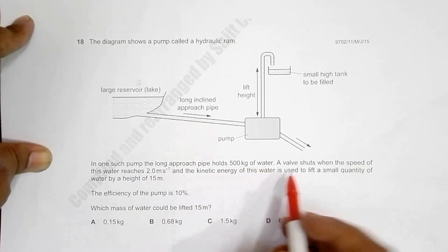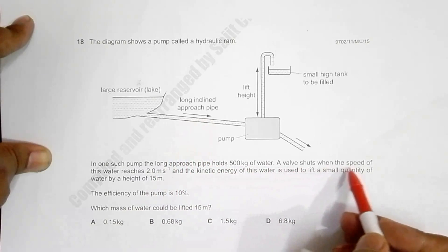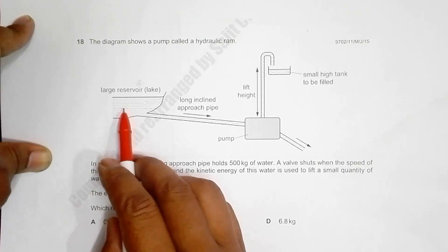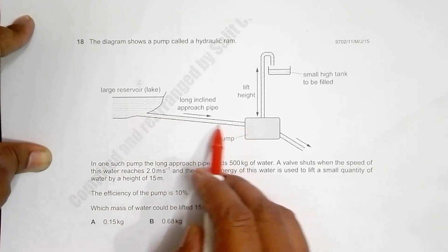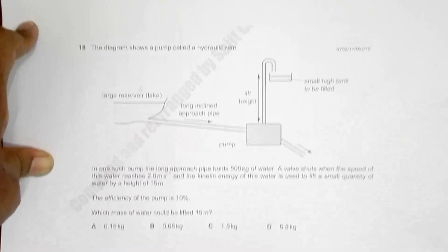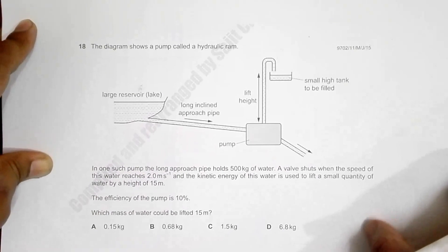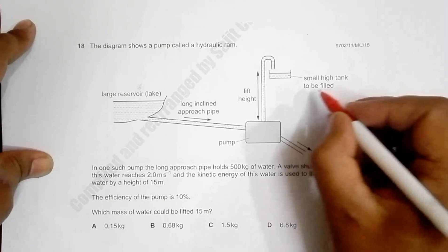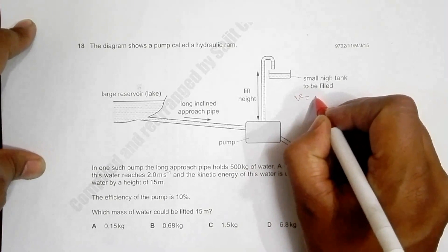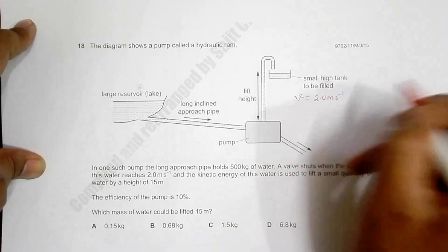A valve shorts when the speed of this water reaches 2 meters per second. So water is at rest here and here it gets a velocity of 2 meters per second. I can write here: velocity of water here is equal to 2.0 meters per second.